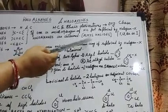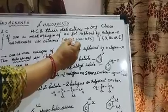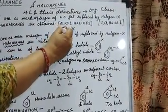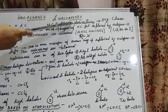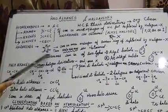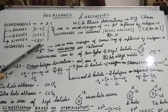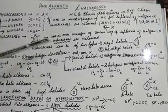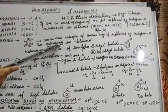Haloalkanes are also called Alkyl Halides and can be represented as RX, where R is for Alkyl and X is for Halide. Moving to Haloarenes: since a Benzene ring nucleus is present, if one or more Hydrogens from the Benzene ring are replaced by Halogen, then Haloarenes are obtained. Halo means Halogen, and Arenes means Benzene nucleus.